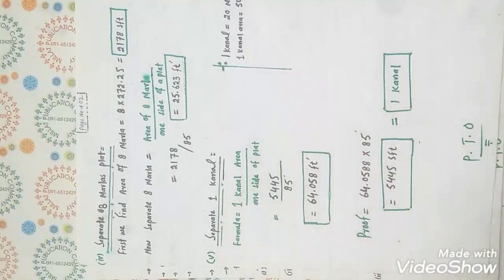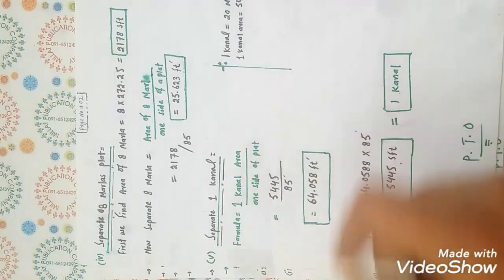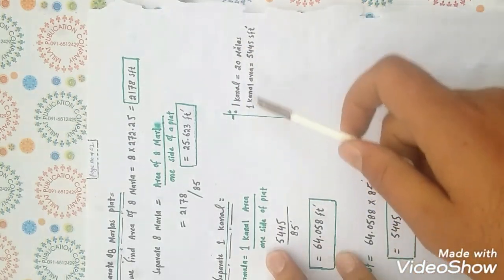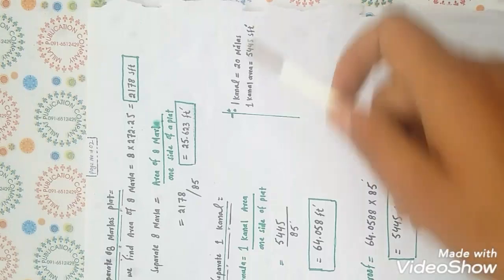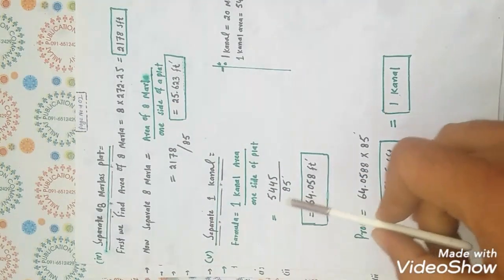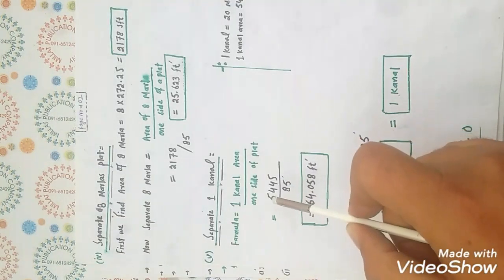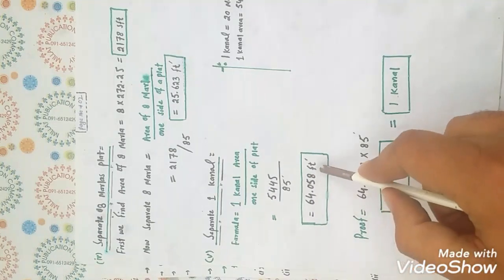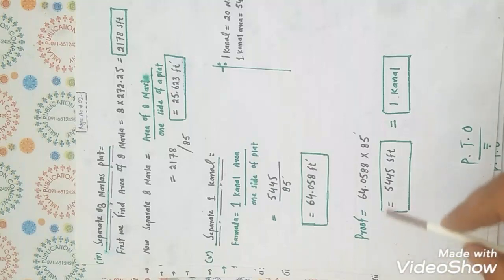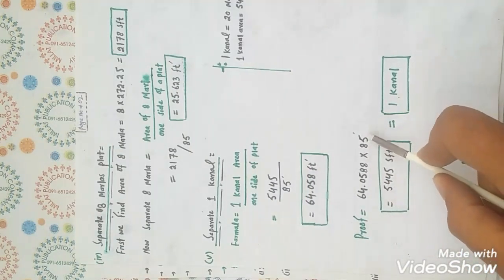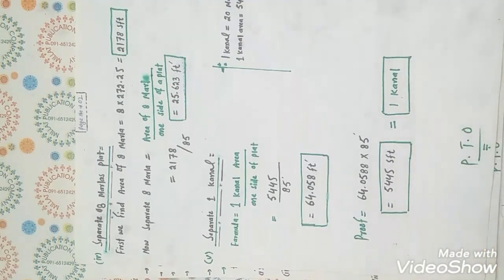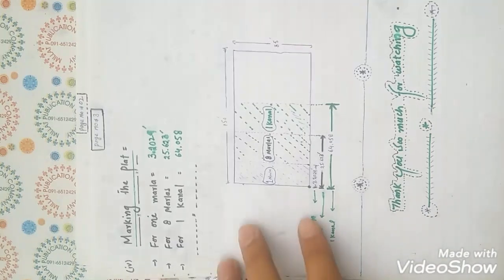To separate one canal, the formula is: one canal area divided by one side of the flat. We know that one canal equals 20 Marla, and one canal area equals 5,445 square feet. Putting the value into the formula: 5,445 divided by 85 equals 64.058 feet. This confirms one canal area equals 5,445 square feet.